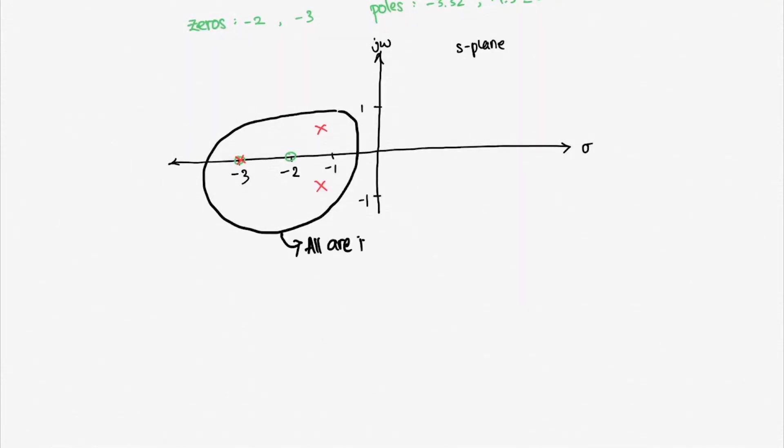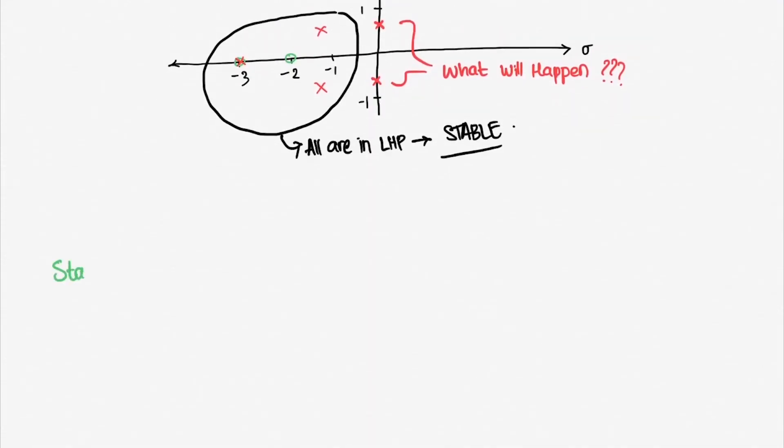If one pole sits in the right half plane, the system suddenly becomes unstable. But what about the poles that exactly sit on the imaginary axis? Well, from the earlier section, I mentioned that there are three types of stability: stable, unstable, and marginally stable. Marginally stable system's poles are all located on the imaginary axis.